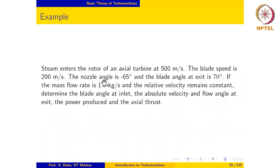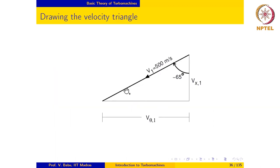We start by constructing the velocity triangle at the inlet and exit of this rotor. To do this, we start with the absolute velocity vector which has a magnitude of 500 meters per second and is oriented in a clockwise direction from the reference direction at an angle of 65 degrees — clockwise because the sign is given to be negative. So here is the absolute velocity vector at inlet, located at an angle of minus 65 degrees from the reference direction.